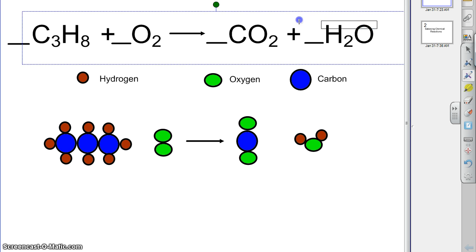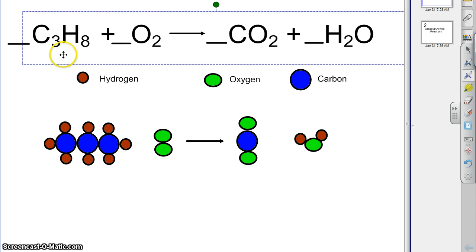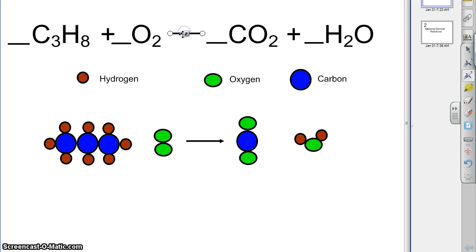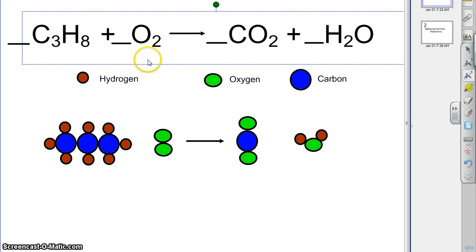Let's start out by examining the actual reaction itself. Propane, C3H8, in the presence of oxygen, combusts to form carbon dioxide and water. Carbon dioxide and water — those are always the products of a combustion reaction. Oxygen is necessary for the reaction to go, and the fuel that we're burning is propane.